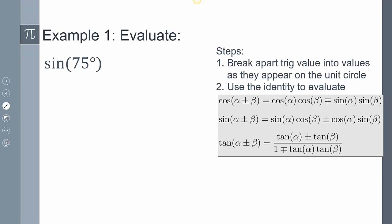Here's our first example: sine of 75 degrees. Sine of 75 degrees is not on the unit circle — we have 30, 45, 60, and 90. I know 75 is between 60 and 90, but we don't have it. So the question is: can I break apart sin(75°) into values I do know on the unit circle? I can say sin(75°) = sin(45° + 30°). Both 45 and 30 are on the unit circle, and the order doesn't matter.